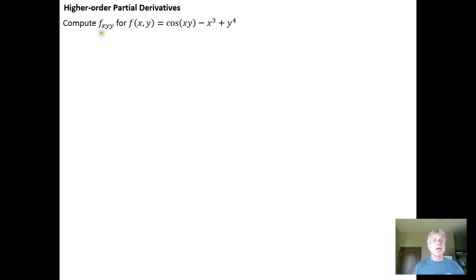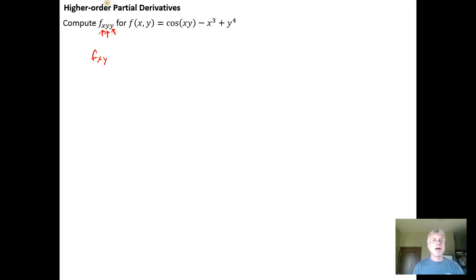For example, if we wanted to calculate f sub xyy, we take the partial derivative with respect to x first, then take the partial derivative of the result with respect to y — giving us the mixed partial f sub xy — and then take the derivative with respect to y of that result. We just extend things in the natural way.